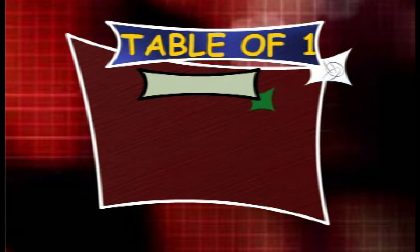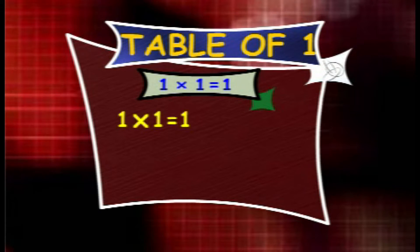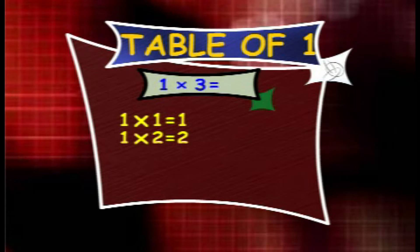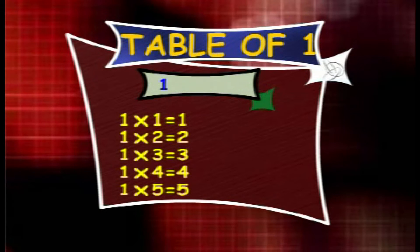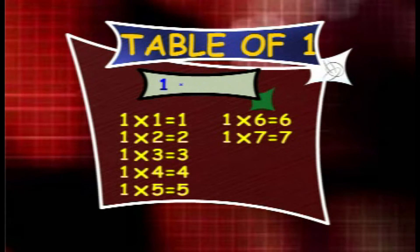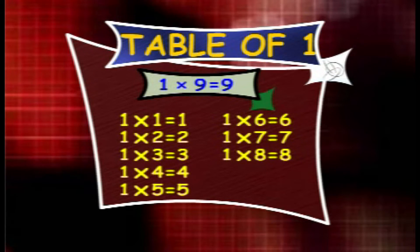Table of 1. 1 1s are 1, 1 2s are 2, 1 3s are 3, 1 4s are 4, 1 5s are 5, 1 6s are 6, 1 7s are 7, 1 8s are 8, 1 9s are 9, 1 10s are 10.